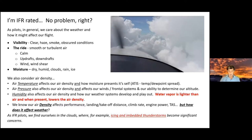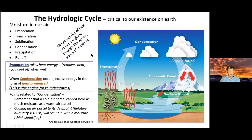When we're doing density altitude calculations in general aviation, we typically only concern ourselves with temperature and pressure — we don't really factor humidity in. But this is very important when it comes to weather, because water vapor molecules are lighter than air molecules. So even though water seems heavy compared to air, when we add vapor to air, it actually makes the air less dense.